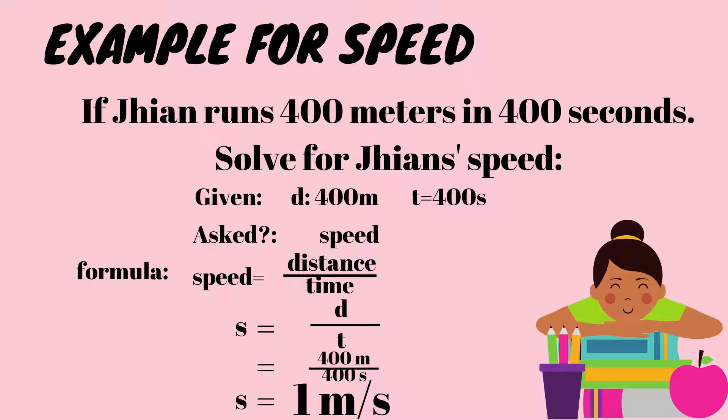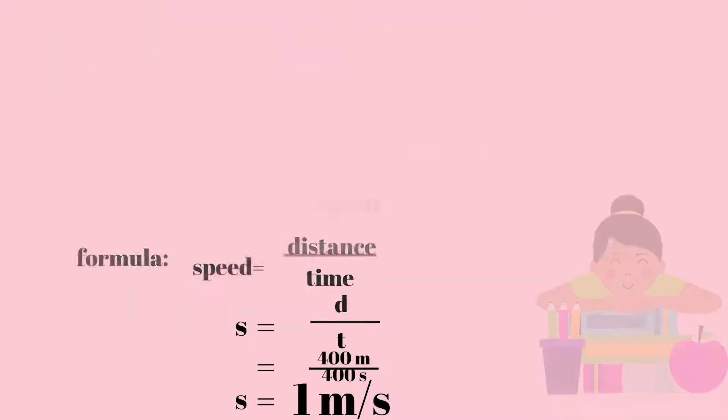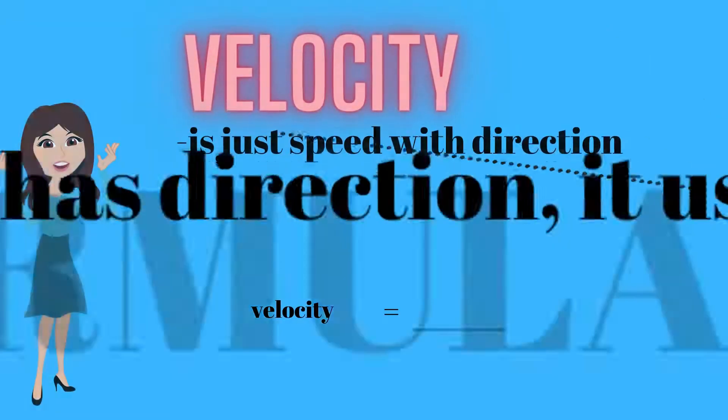Speed equals distance over time, S equals D over T. So 400 meters divided by 400 seconds equals 1 meter per second. Jian's speed is 1 meter per second.